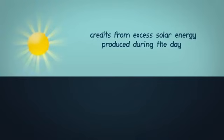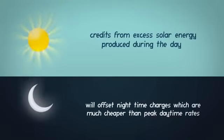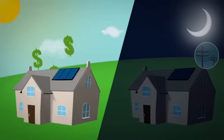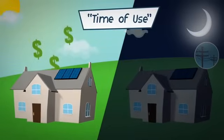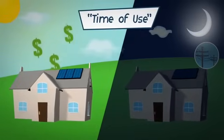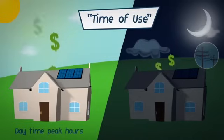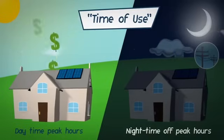However, credits from your excess solar energy produced during the day will offset nighttime charges which are much cheaper than peak daytime rates. This maximizes your savings through time-of-use billing, where you are selling energy to the utility during daytime peak hours while buying energy during nighttime off-peak hours.